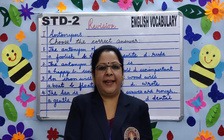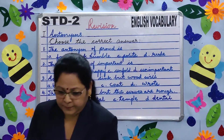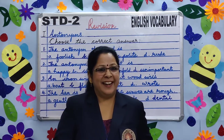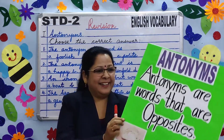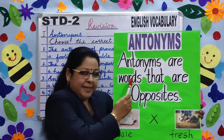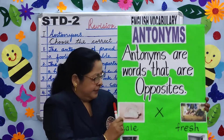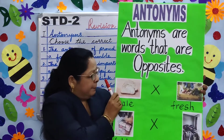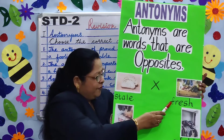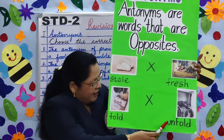The first topic is antonyms. What are antonyms, children? Antonyms are words that are opposites. For example: stay and fresh, hold and unfold.